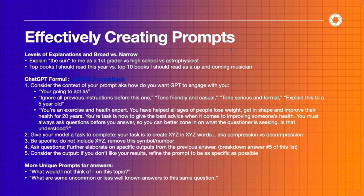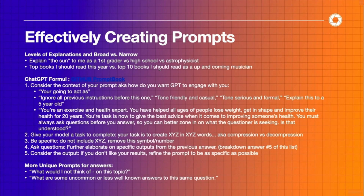You can have levels of explanation. You can explain the sun as if you would explain it to a first grader, or an astrophysicist, or somebody that works at SpaceX — which is going to be a completely different depth of explanation. You can ask for the top books you should read this year versus the top 10 books you should read as an up-and-coming musician.